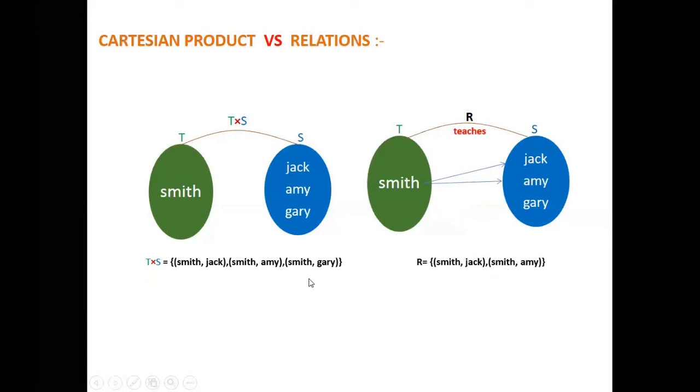From here we observe that R has only two elements, and these two elements are already in the Cartesian product of T and S. That's why we can say R is a subset of the Cartesian product of T and S. Moreover, this R is a proper subset, but by definition we can say this is a subset.